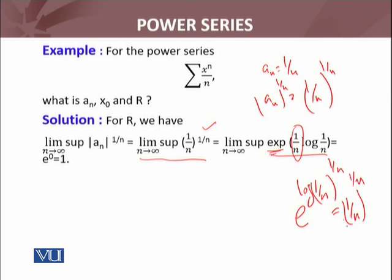So (1/n)^(1/n) is the answer. By this way, as n approaches infinity, we have e^0, and e^0 equals 1. So the radius of convergence for this particular example will be R = 1 over lim sup of (1/n)^(1/n), which is 1.